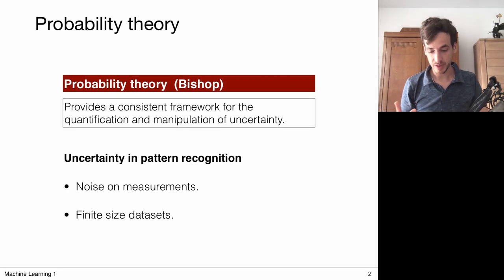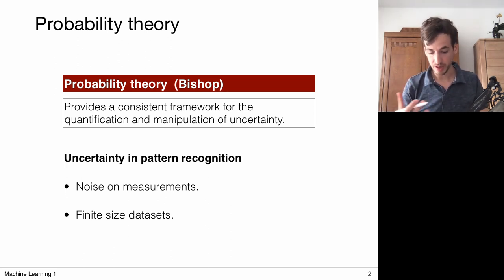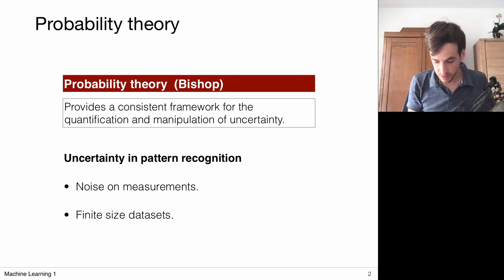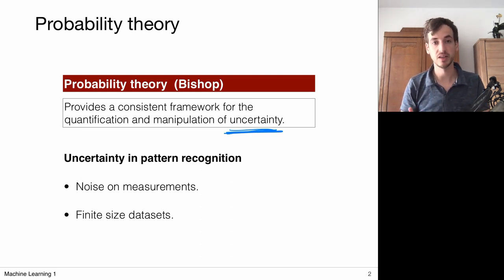There are many things to be said about probability theory, and one of the most important statements is taken from the Book of Bishop, where he says that probability theory provides a consistent framework for the quantification and manipulation of uncertainty.